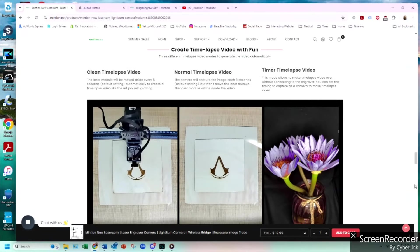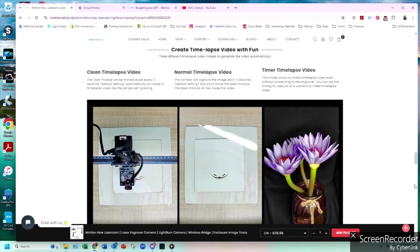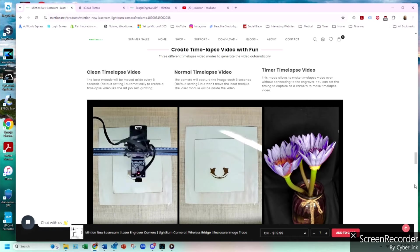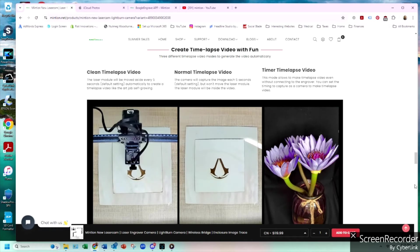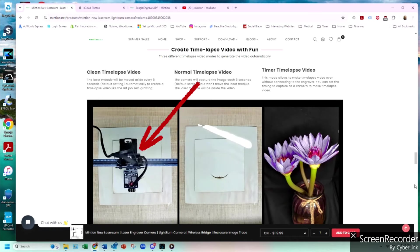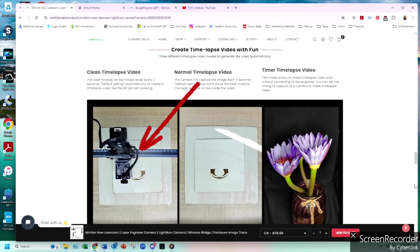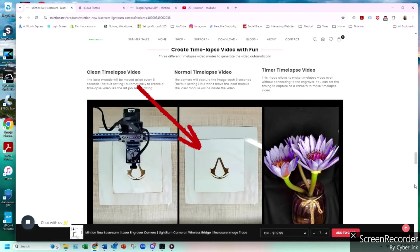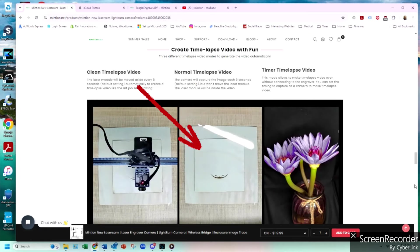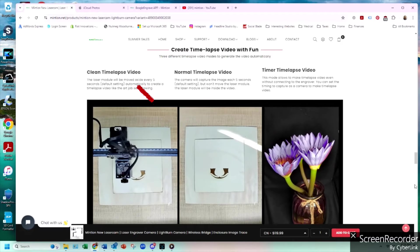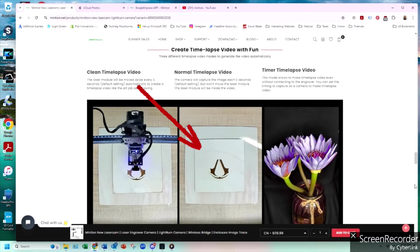The Beagle Engrave software also allows you to record time lapses of your engraving. They have two modes, normal and clean. In the normal mode, you can see the laser head and gantry in the time lapse. And in the clean mode, the laser head will move out of the view of the camera so it appears the image is appearing from thin air.